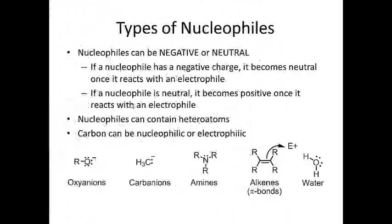Let's look at some types of nucleophiles, and then we'll look at some types of electrophiles. Remember, we talked about nucleophiles and gave them several names: a nucleophile can be a source, a Lewis base, electron rich, or an electron donor. If a nucleophile has a negative charge, once it reacts with an electrophile, that charge is neutralized. By the same token, if a nucleophile is neutral, when it reacts with an electrophile, it becomes positive because of formal charge rules.